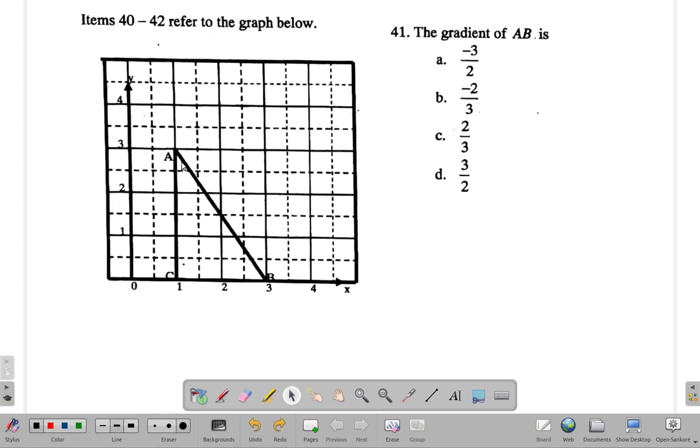Now here it says the gradient of AB is - what's the gradient of AB? That's this. Now let's use the rise over run to do it. First of all AB, as you go to the right, if you walk along